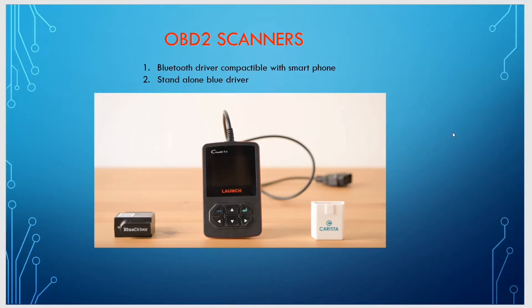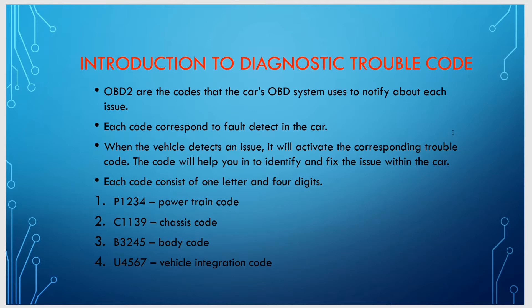In the next slide you can see there are two kinds of OBD2 scanners available in the market: one is a Bluetooth-compatible scanner that works with smartphones, and another is a standalone Bluetooth device. Whichever you are compatible with, you can buy it and use it to read your trouble codes.